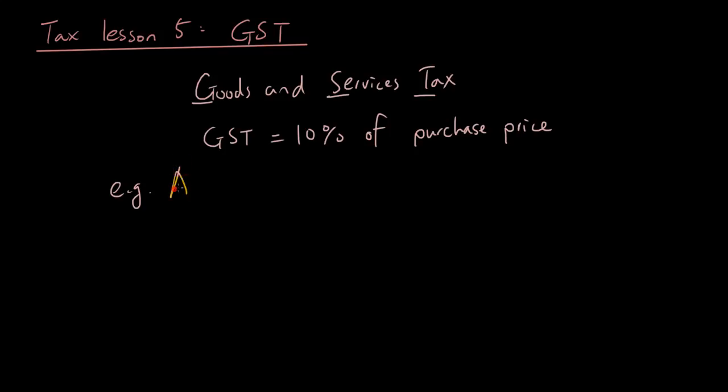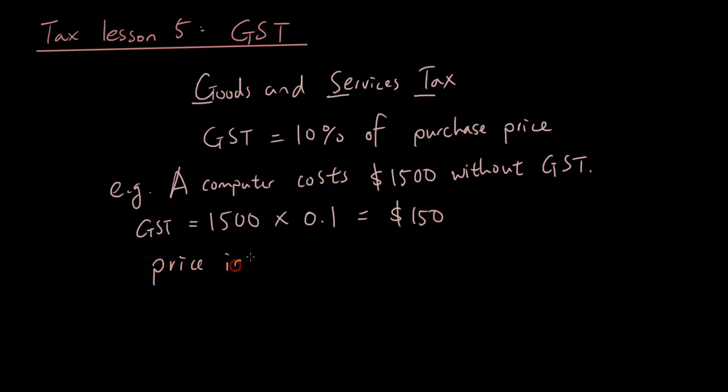So for example, a computer costs $1,500 without GST. So GST has not been added on. Now when you buy this computer, you have to add 10% to it. So the slow way is you can go 1,500 times 0.1 and that way you can work out what the GST equals. So the GST will be equal to $150 and then you add that on.